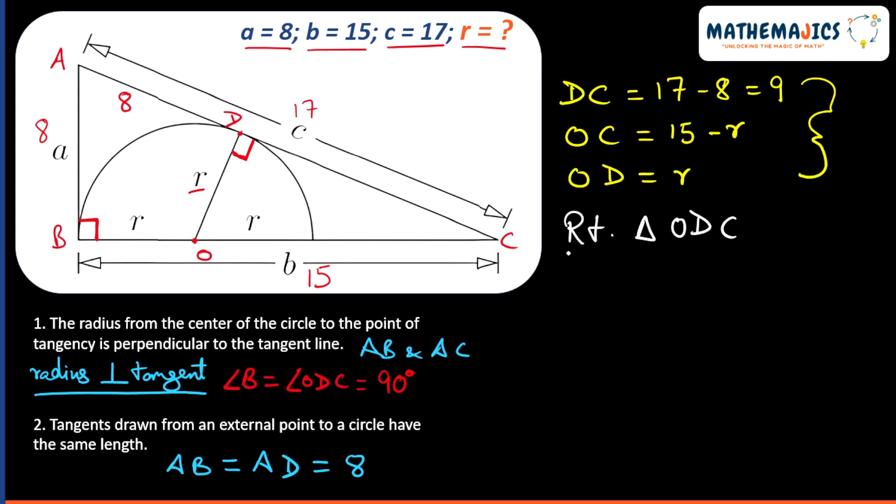Why is triangle ODC a right triangle? From this. In the beginning, we saw that angle ODC is 90 degrees.